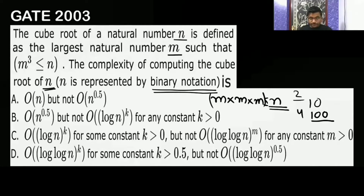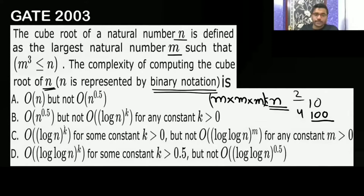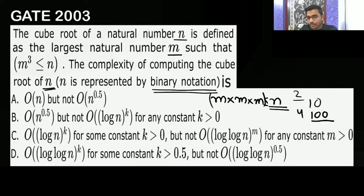Let me start. If you have some number n and you have to find the cube root, such that cube root of n is going to be your m. If you do m × m × m, that should be less than or equal to n.